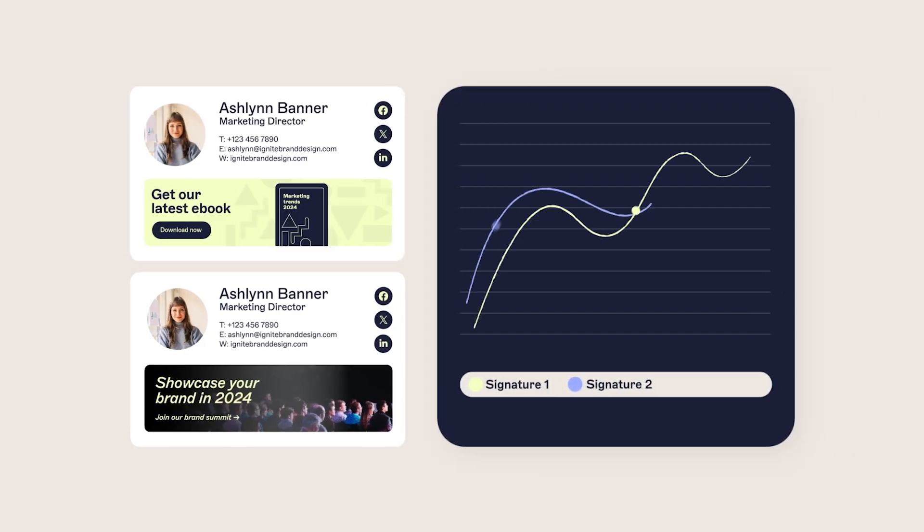But what if you're managing email signatures across your entire company? Adding GIFs can be done one by one, and that's very time consuming. So that's where Exclaimer comes in. With our platform, you can centrally control and deploy email signatures, animated GIFs, and all, ensuring brand consistency across the board.